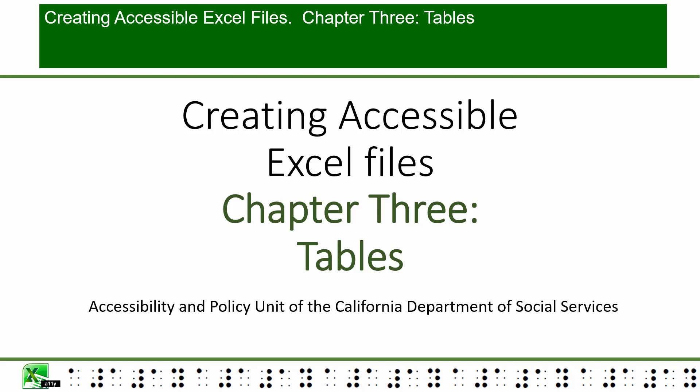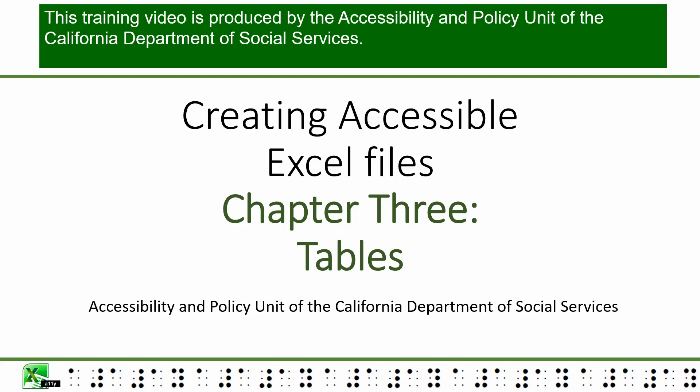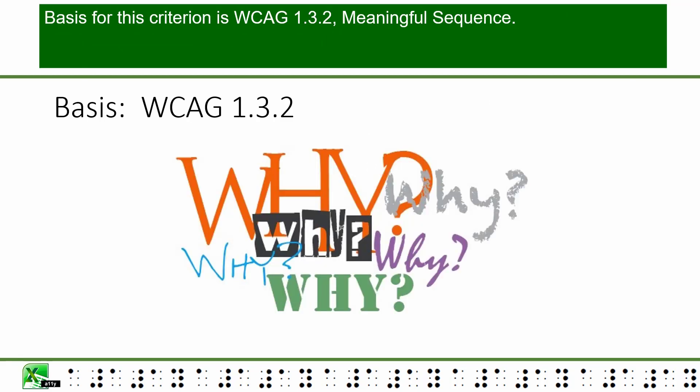Creating Accessible Excel Files, Chapter 3: Tables. This training video is produced by the Accessibility and Policy Unit of the California Department of Social Services. The basis for this criterion is WCAG 1.3.2 Meaningful Sequence.